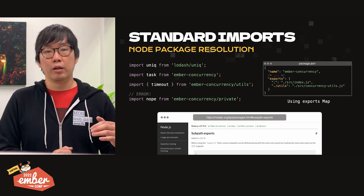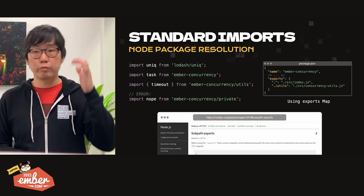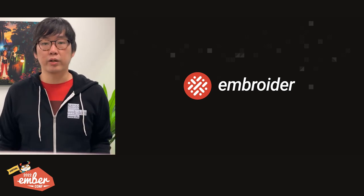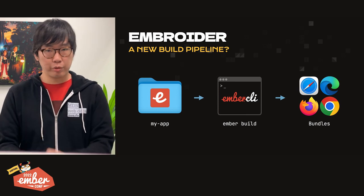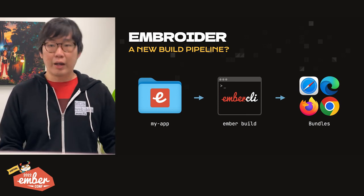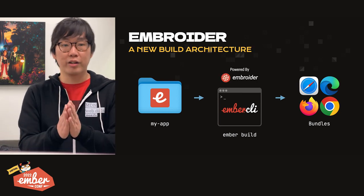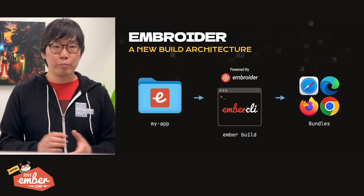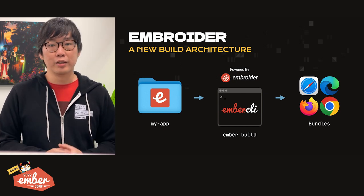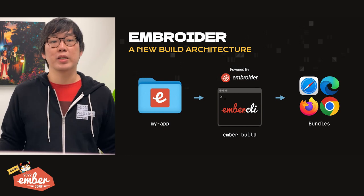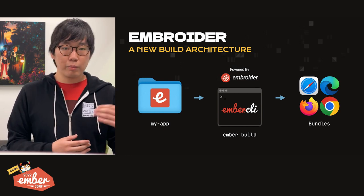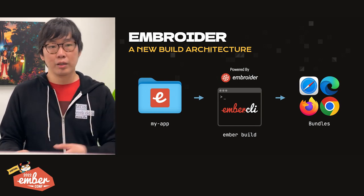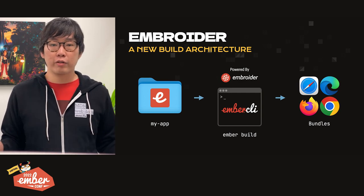By following standard conventions, your editor can now jump you to the right place, TypeScript can just work, and if you made a typo in an import, you can get a red underline in your editor right away instead of finding out later in the browser with a broken app. As an add-on author, if you want to keep some of your modules private, you can now use standard solutions like export maps and expect that to work with Ember's module resolution algorithm. You're learning a standard feature that works everywhere instead of some Ember-specific hooks. So what is actually doing all of this? Where does this resolution algorithm live and what is actually linking up the modules? This is a good time to finally address Embroider.